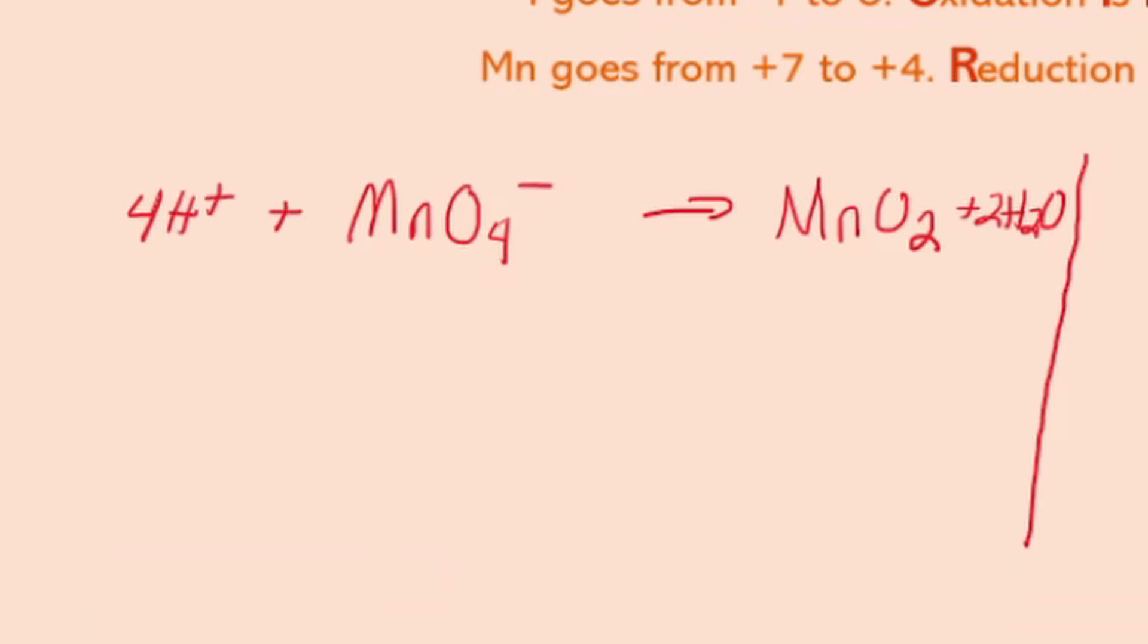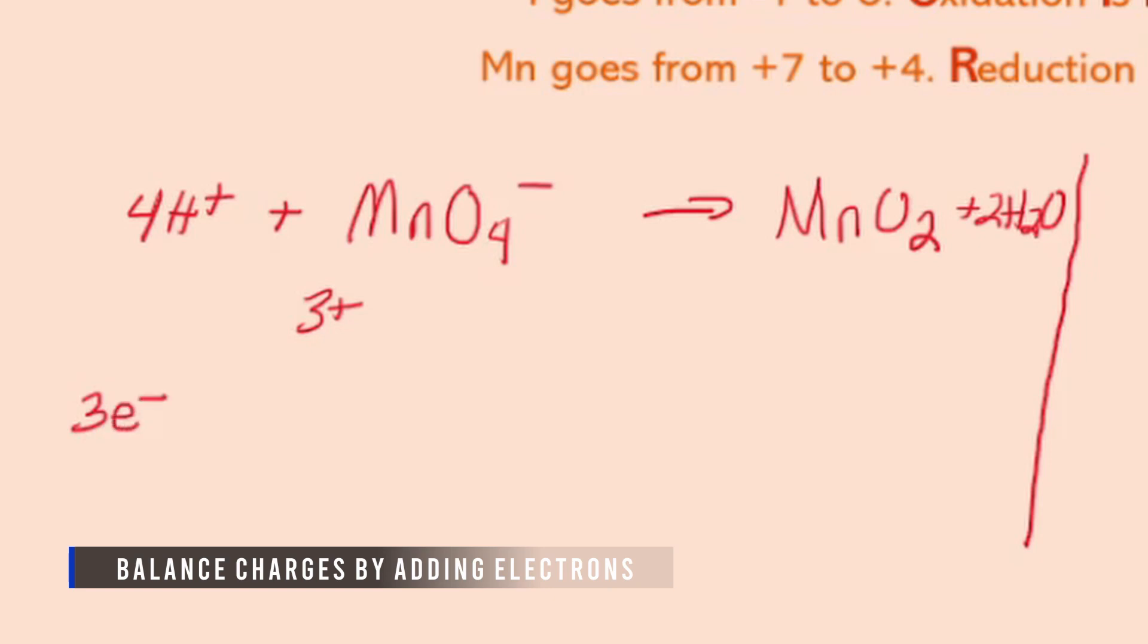Okay so I should be fairly well balanced now however I'm going to have to balance my charges. So if I look here I know I've got 4H+ and a minus so that's going to give me a three plus net charge here, I'm neutral, and so I'm going to have to add some electrons. So let's go ahead and write this down. I need three electrons plus 4H+ plus MnO4-.